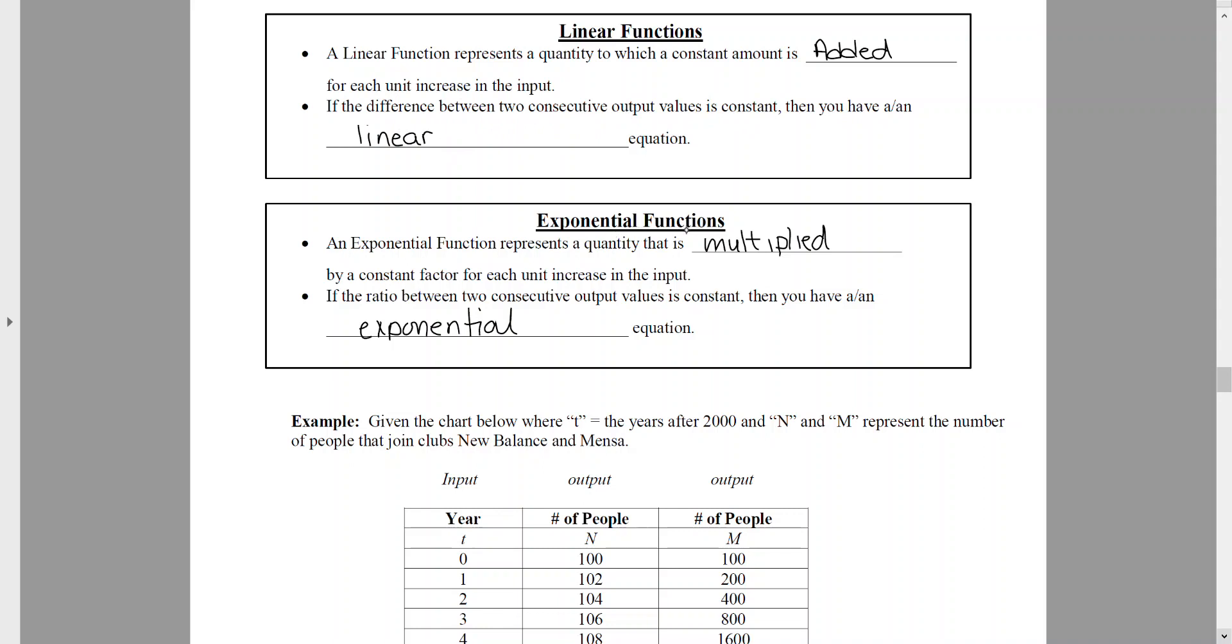For exponential functions, though, an exponential function represents a quantity that is multiplied by a constant factor for each unit increase in the input. If the ratio between two consecutive output values is constant, then you have an exponential equation.